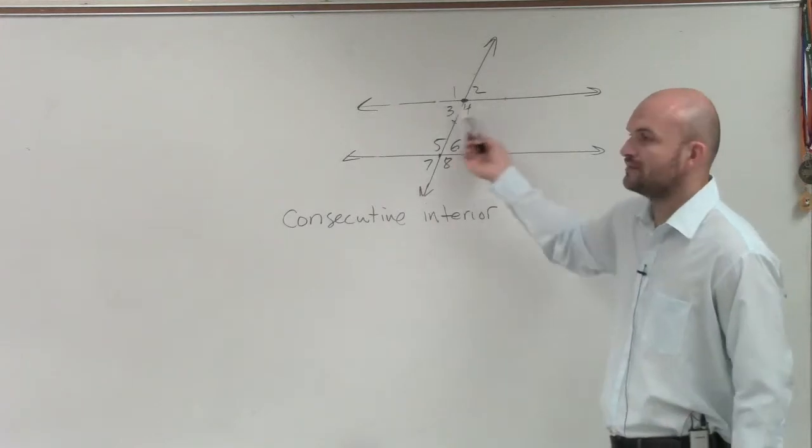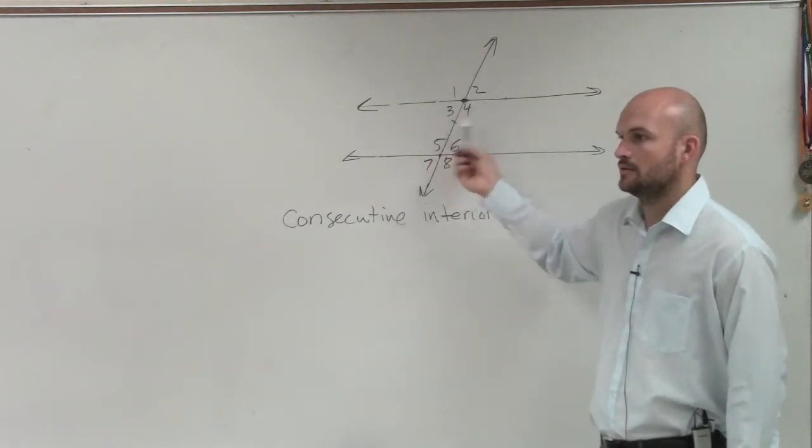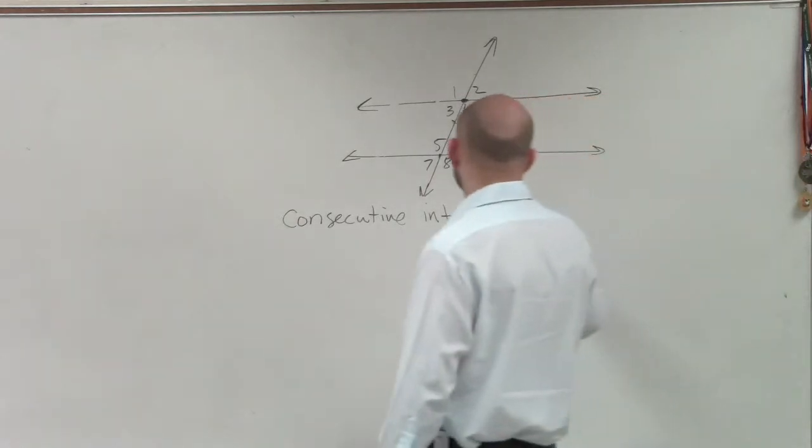Now, we already know 3 and 4 are what type of angle? Those are what we already call a linear pair. But 3 and 5, those are an example of consecutive interior.